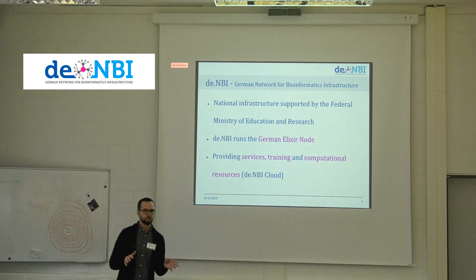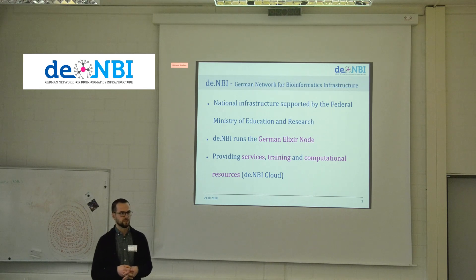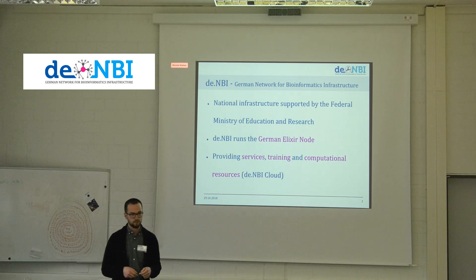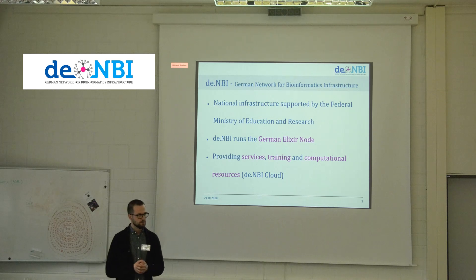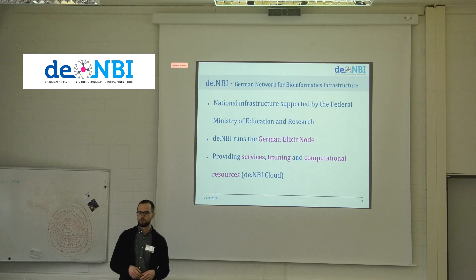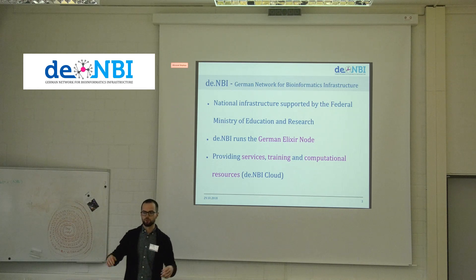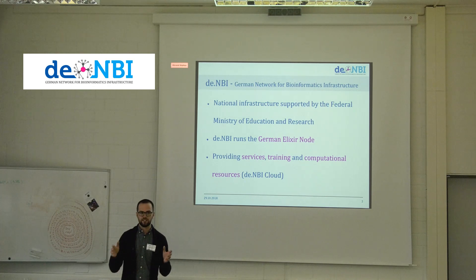Before I dig deeper into the de.NBI Cloud and cloud computing, let me first explain what de.NBI actually is. de.NBI is a German network for bioinformatics infrastructure — a coordinated and distributed infrastructure funded by the Federal Ministry of Education and Research, made for life sciences. Since 2017, de.NBI also runs the German Elixir node. Elixir operates on a European level as an intergovernmental organization connecting life science resources and communities across Europe.